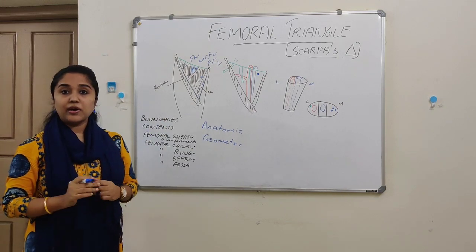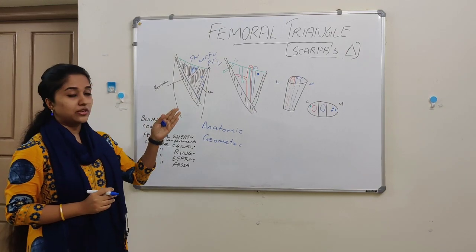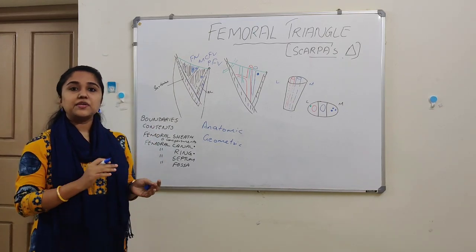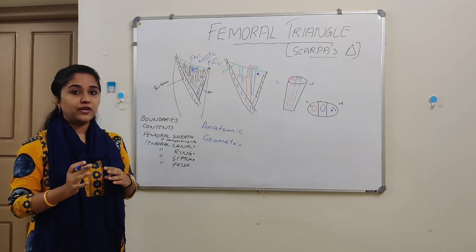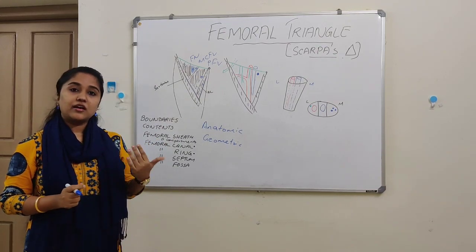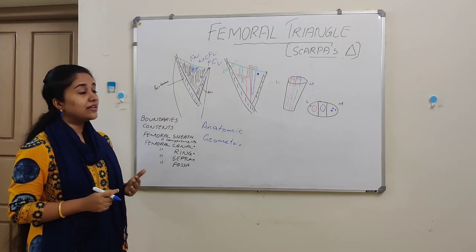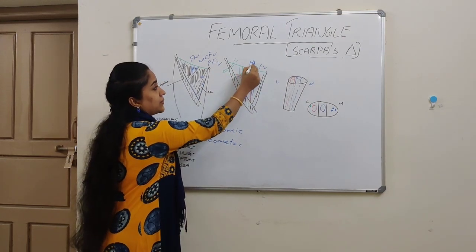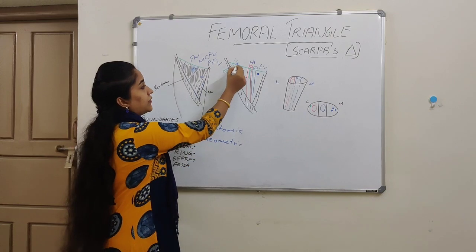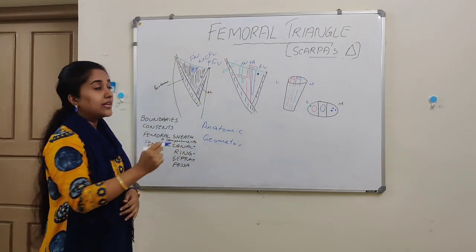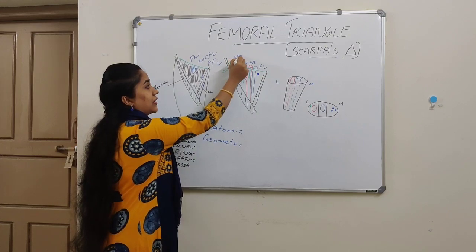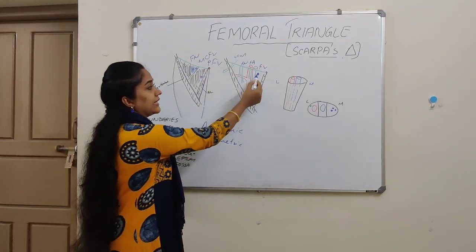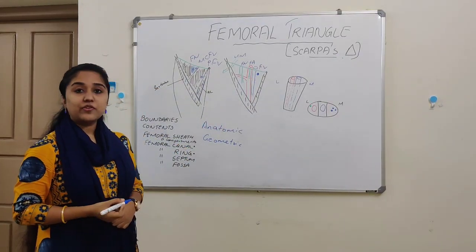That's all about the boundaries of the femoral triangle. It is a triangular depression in the upper one third of the femoral thigh. Now we will see what are its contents. As the name suggests, it is femoral triangle because it is related to the femur. The main contents are the femoral vein and its tributaries, the femoral artery and its branches, the femoral nerve and its branches, the lateral cutaneous nerve of thigh, the femoral branch of genitofemoral nerve, and there are deep inguinal lymph nodes and fibro-fatty tissue.